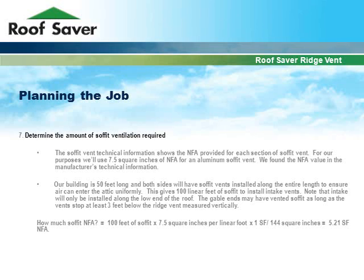The soffit vent technical information shows the net free area provided for each section of soffit vent. For our purposes, we'll use 7.5 square inches of NFA per linear foot for aluminum soffit vent, a value found in the manufacturer's technical information. Our building is 50 feet long and both sides will have soffit vents installed along the entire length to ensure air enters the attic uniformly, giving 100 linear feet of soffit for intake vents. Intake is only installed along the low end of the roof; gable end vented soffit may be used as long as vents stop at least 3 feet below the ridge vent measured vertically. Multiplying 100 feet by 7.5 square inches per linear foot and converting gives us 5.21 square feet of net free area.